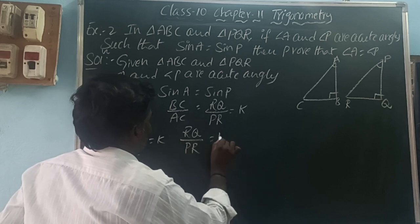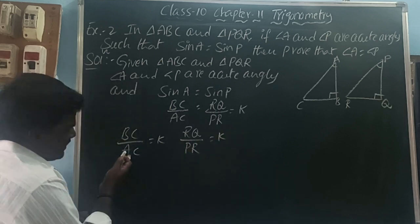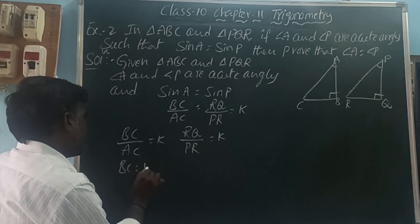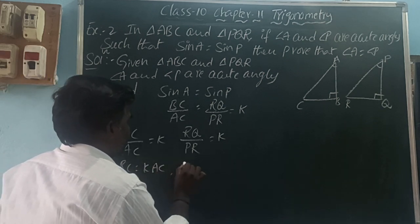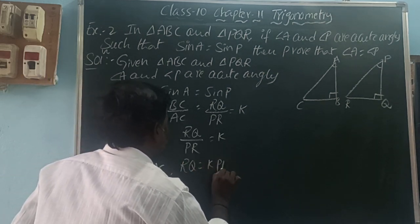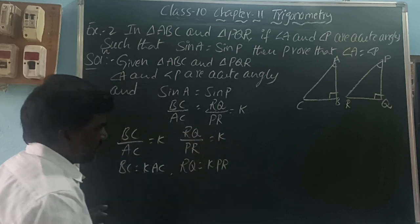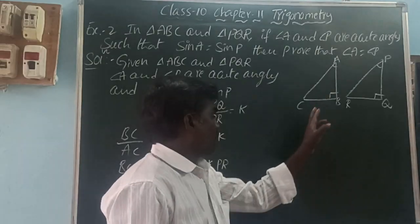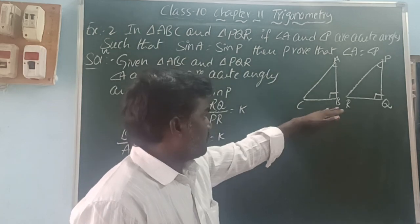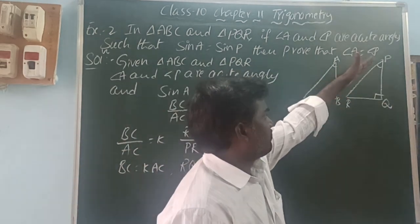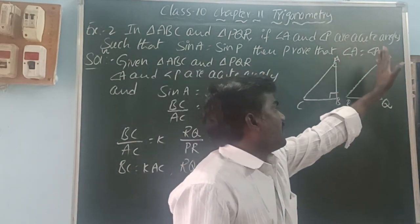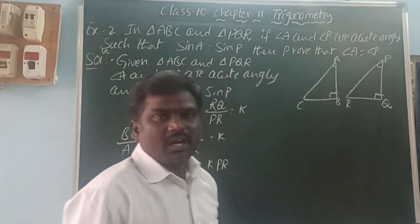So BC over AC equals RQ over PR equals k. Therefore BC is equal to k·AC, and RQ is equal to k·PR. In each triangle we now know two sides: BC and RQ and PR, but we still need AB and PQ, which we can find using the Pythagorean theorem.